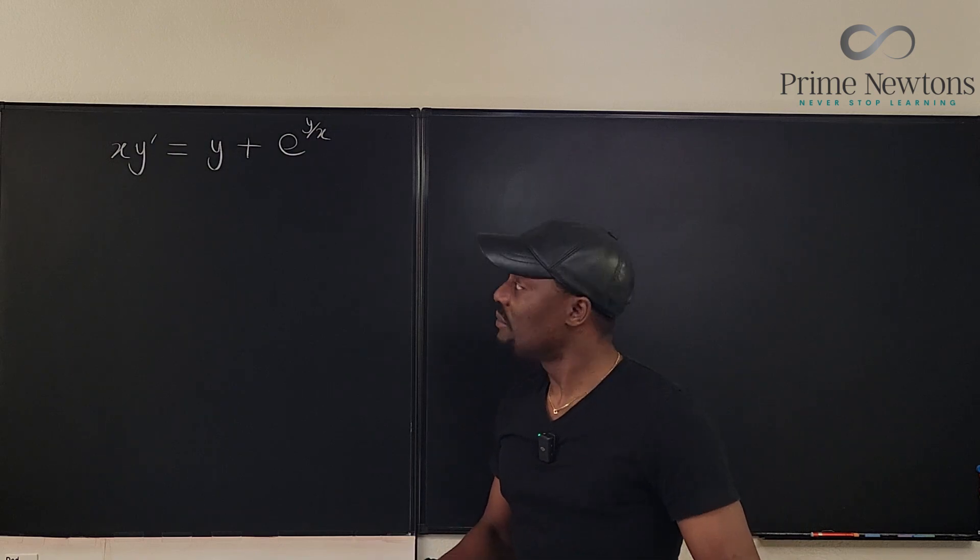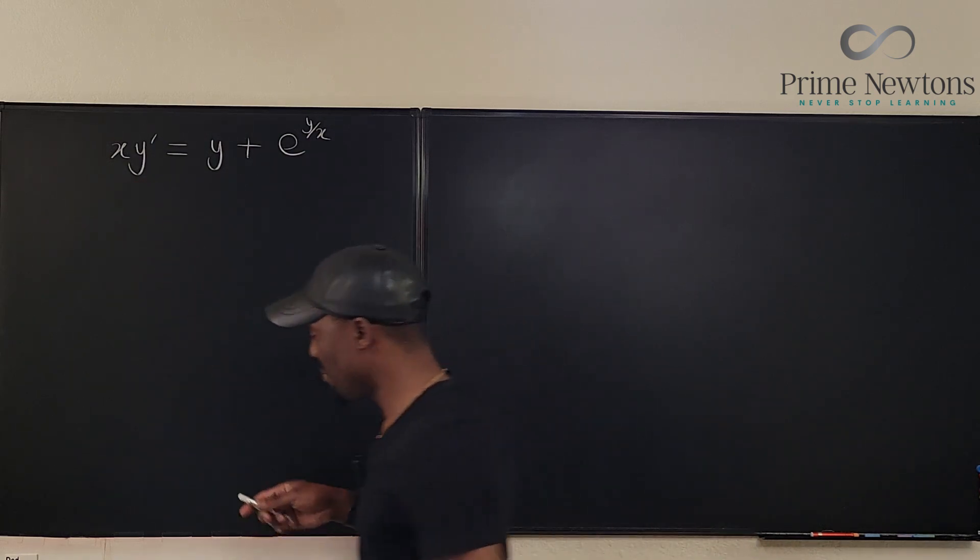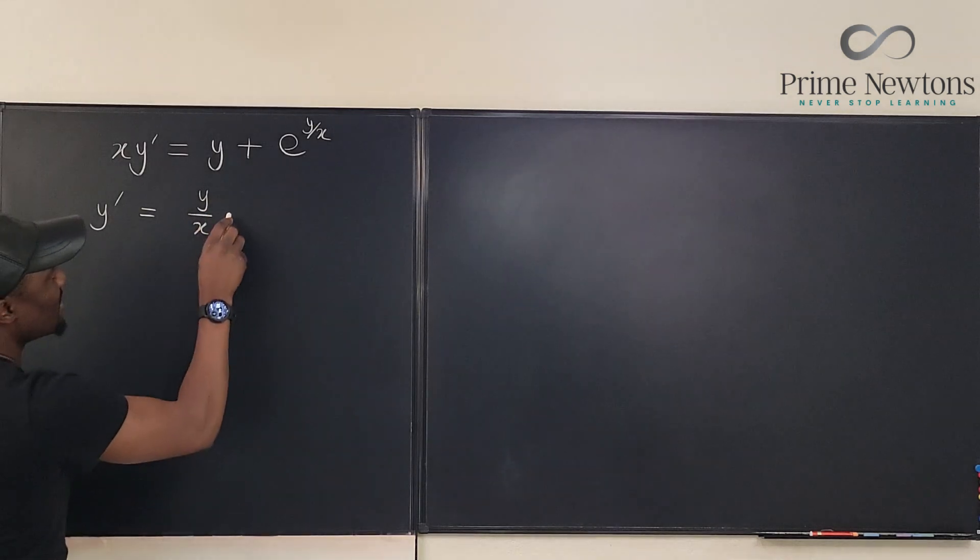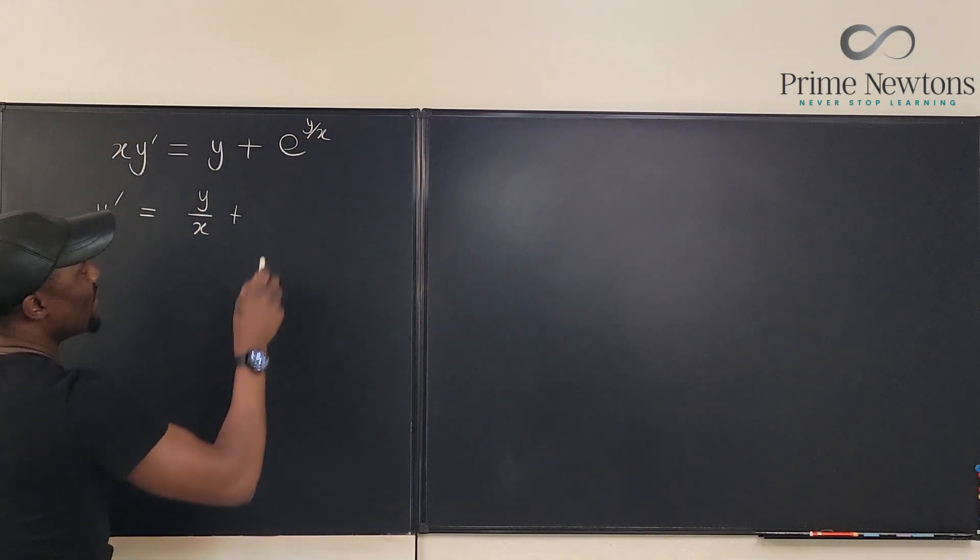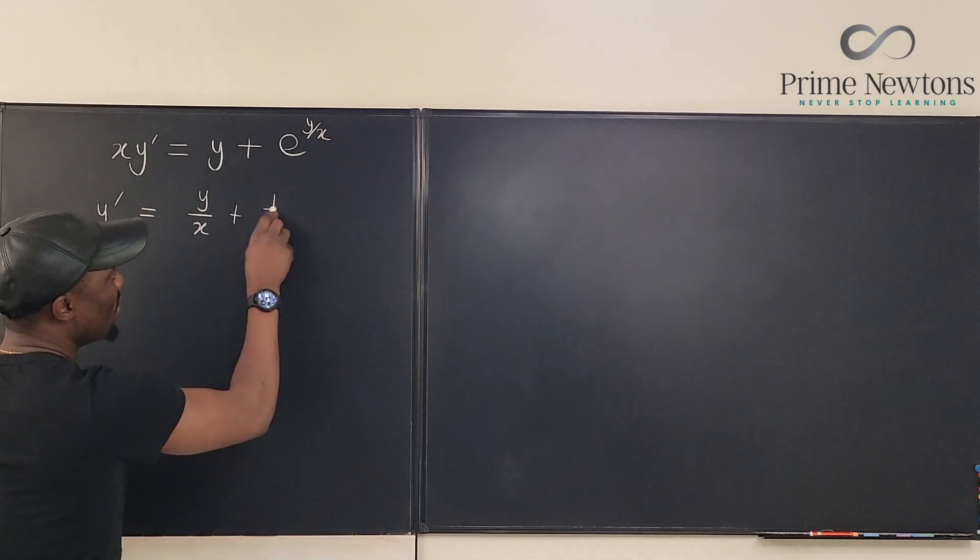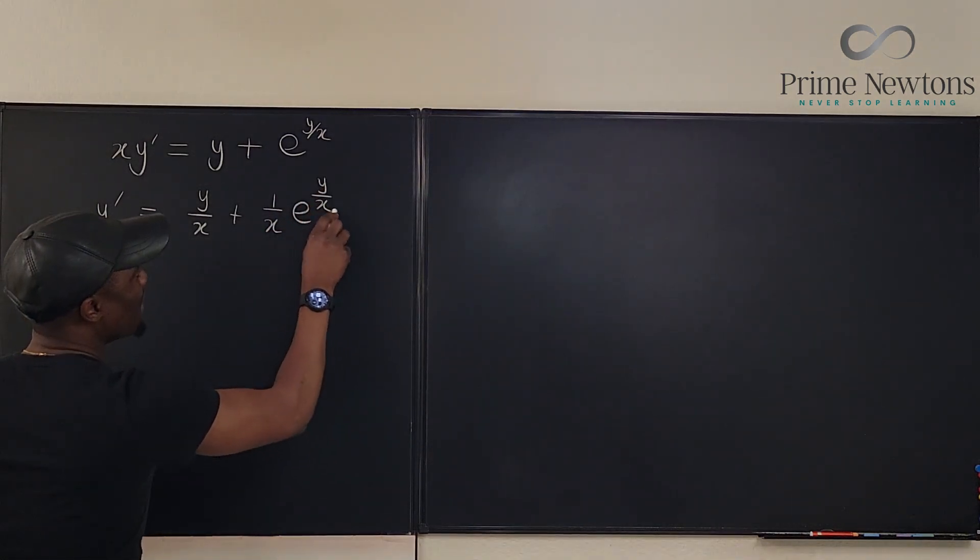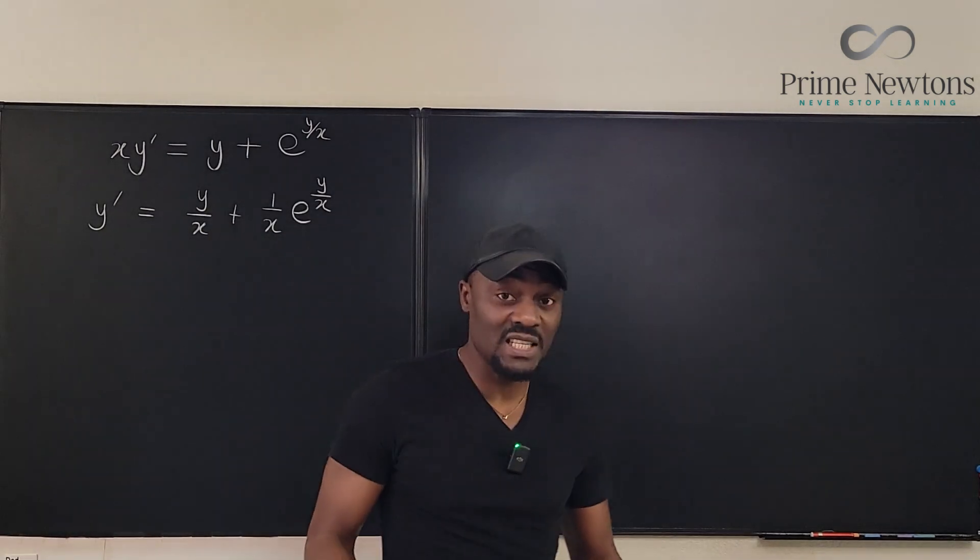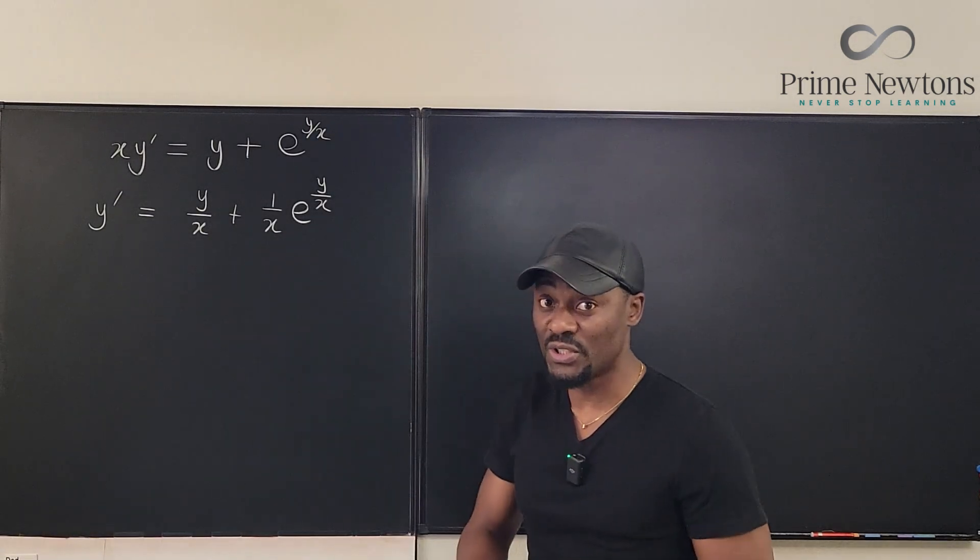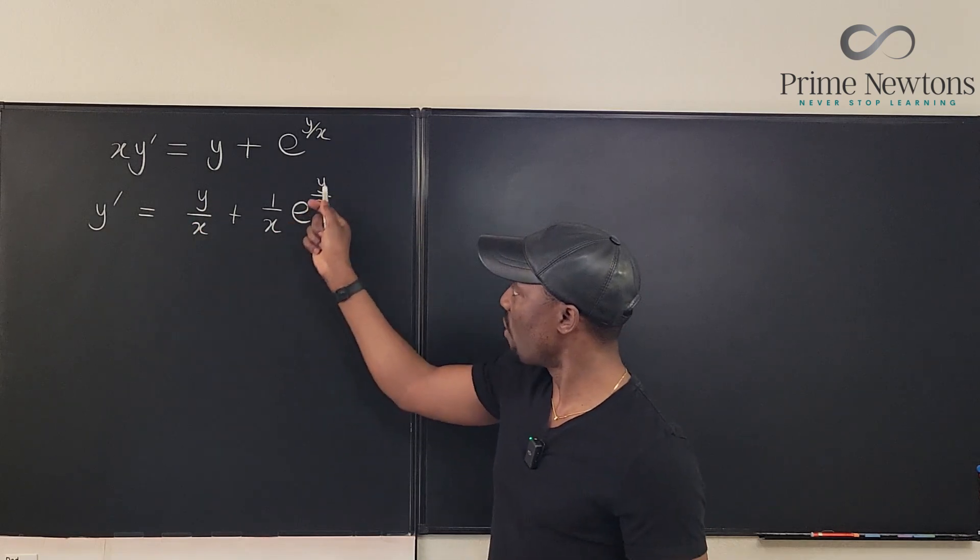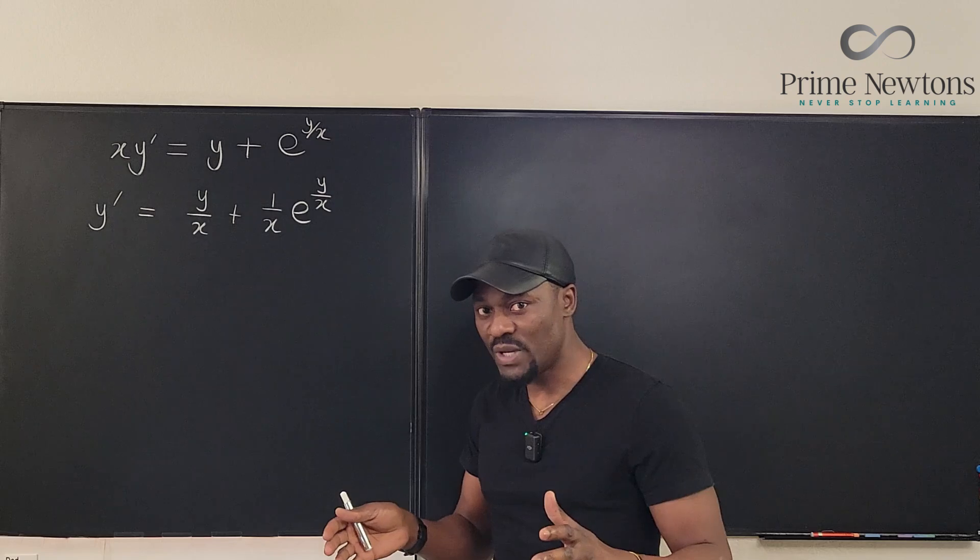My first attempt will be to isolate this guy first and see the picture that we have. So if we divide every term by x we're going to end up with y prime equals y divided by x plus e to the y over x divided by x. I'm going to write it as 1 over x times e to the y over x. Now this question was designed in this manner so you could see something common. There's y over x here and y over x here.